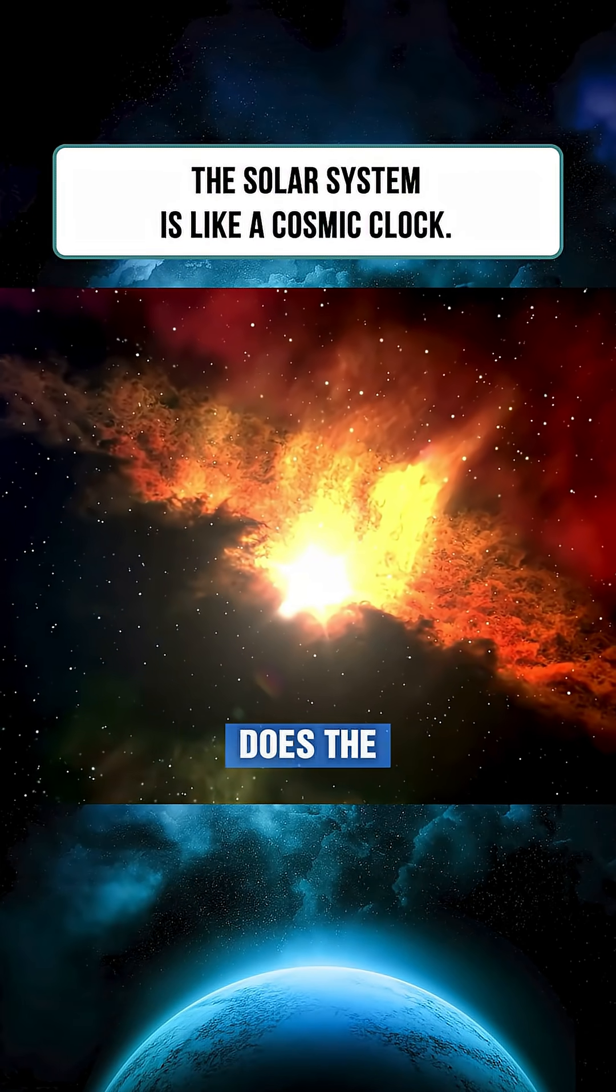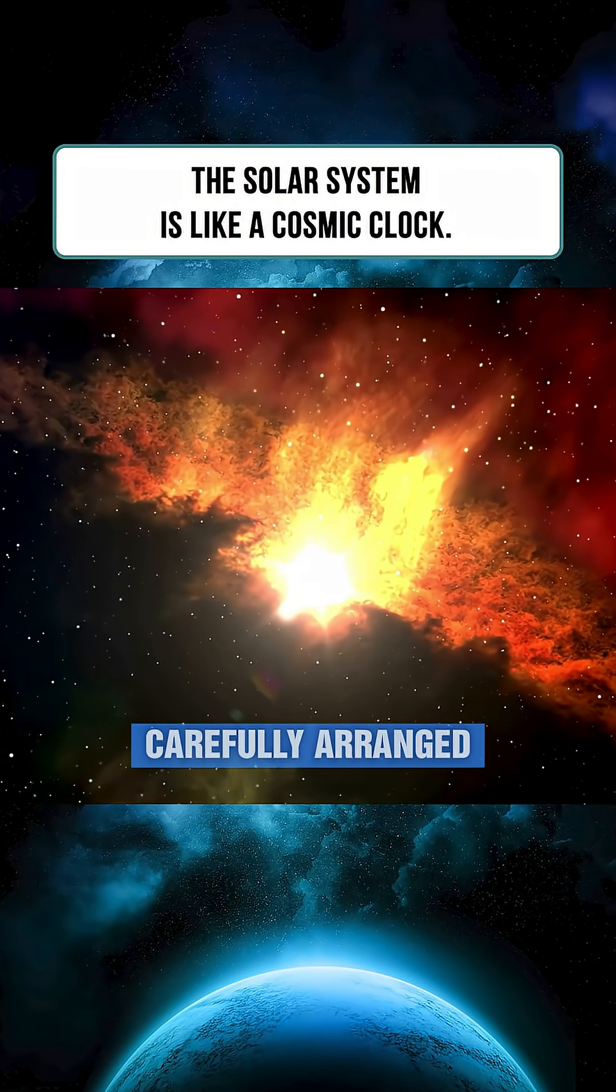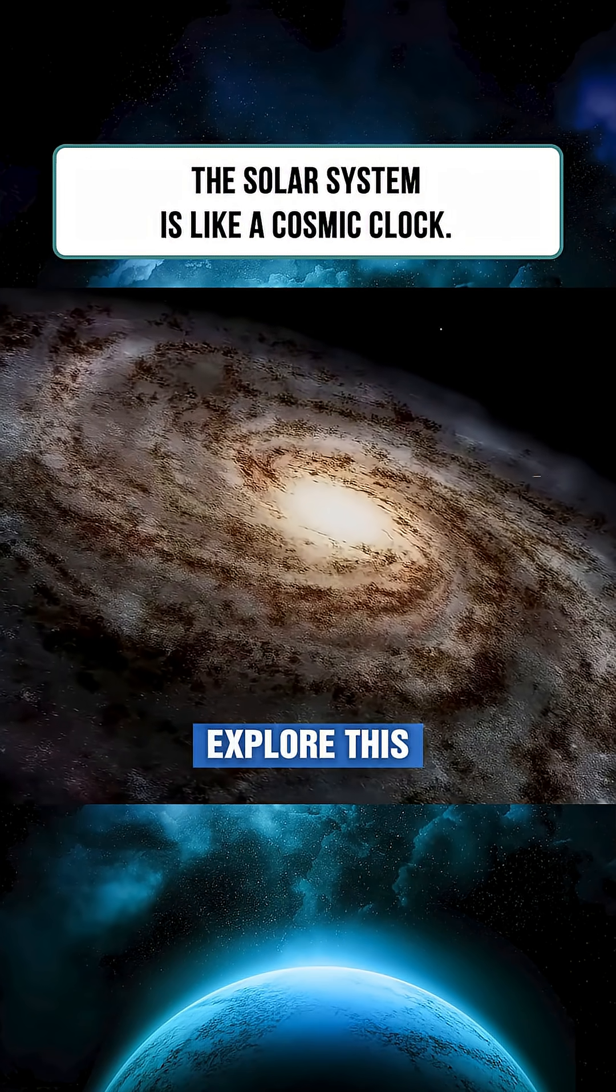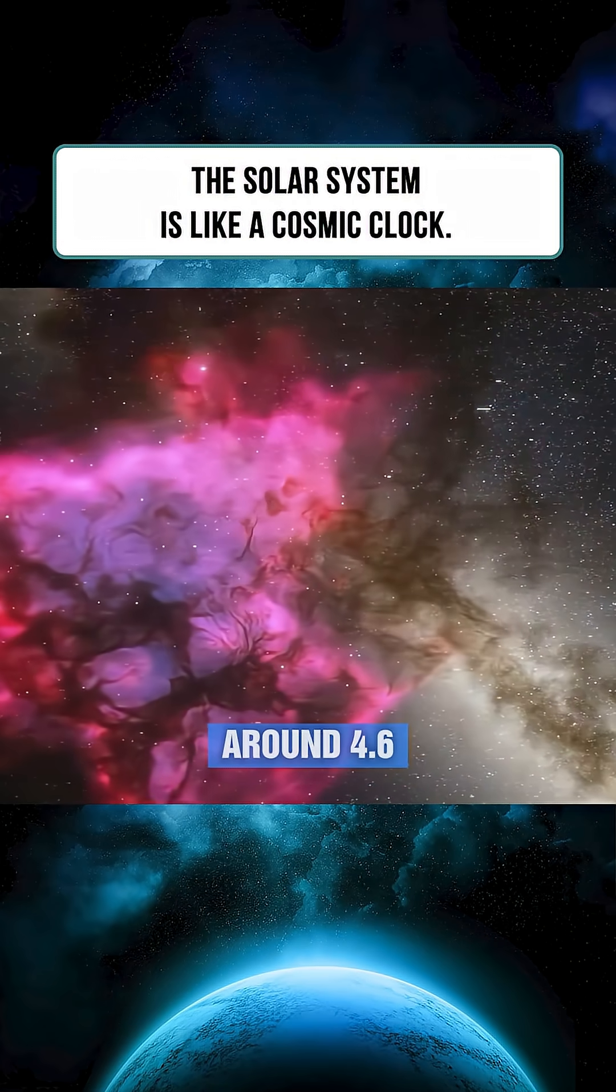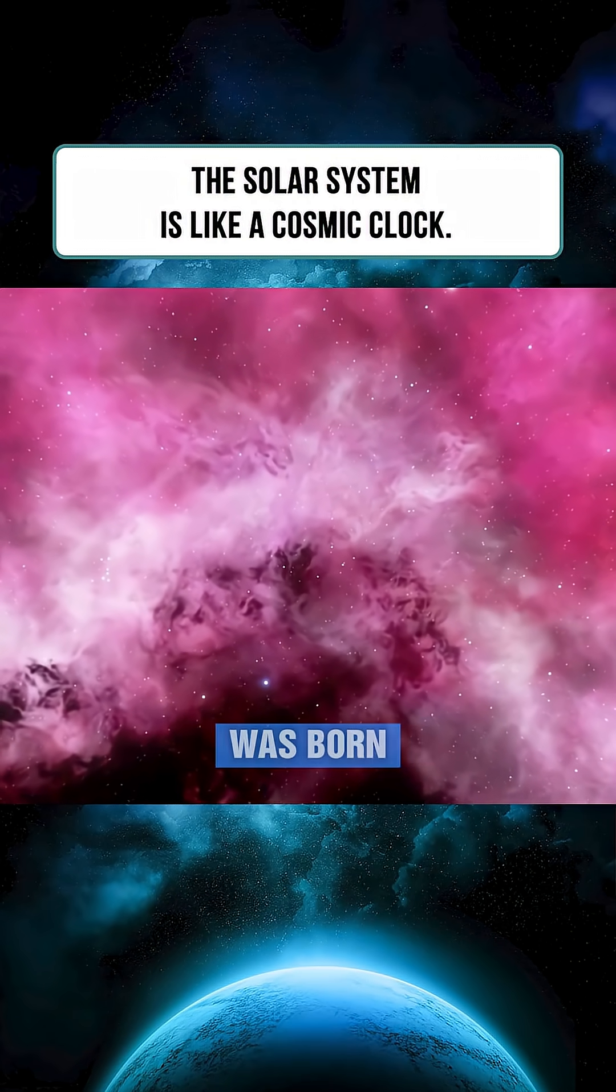So, why does the solar system seem so carefully arranged? Was it designed this way? To explore this question, we must journey back in time around 4.6 billion years ago, when the solar system was born.